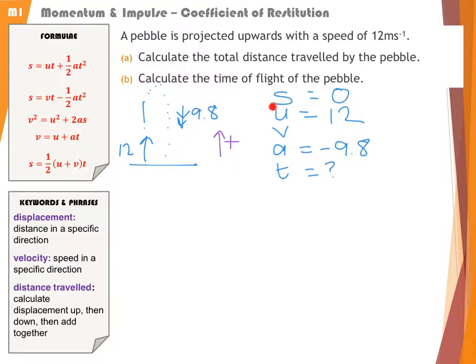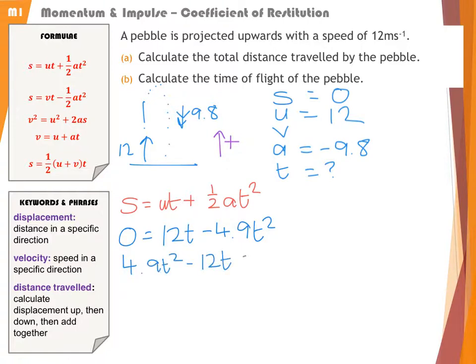With S, U, A, and T, the only formula that works is this one. S = UT + ½AT². 0 = 12T - 4.9T². This is a much nicer quadratic because we haven't got a constant term. Rearranging and factorizing out T: T(4.9T - 12) = 0. One solution is T = 0. Obviously, the displacement in no seconds is still 0.